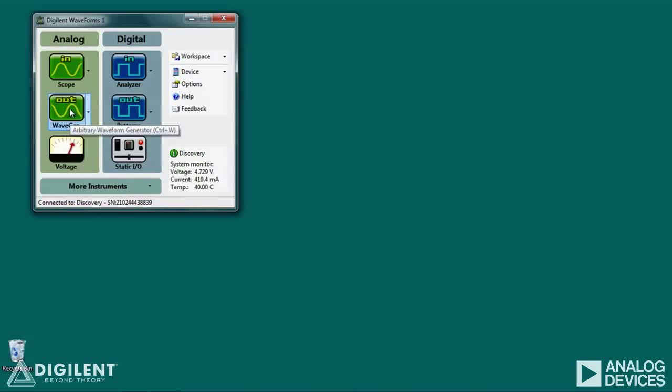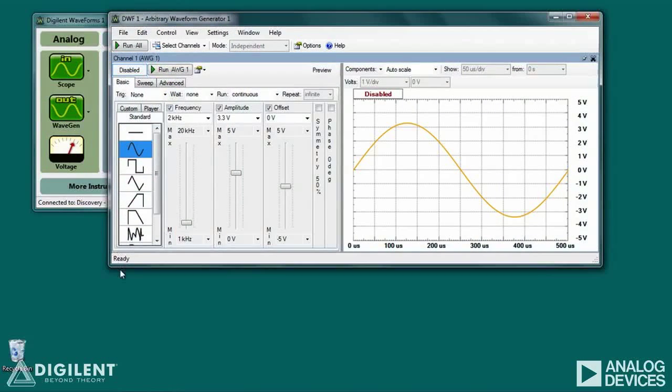Clicking on the WaveGen icon opens the waveform generator window. This window is fairly complex, since the Analog Discovery's waveform generator provides a very wide range of capabilities. In this video, we will only introduce some of the basic and most common functions provided by the WaveGen instrument. By default, only channel 1 of the AWG opens the first time you open the WaveGen instrument. If you wish to select an additional channel, simply click on the select channels button and choose the channel you want to select or deselect.